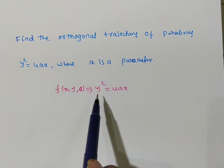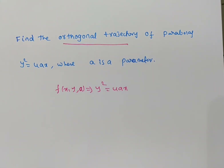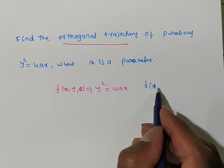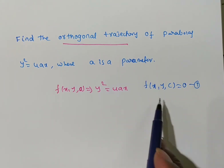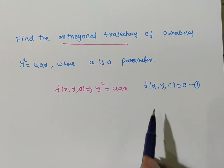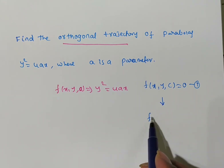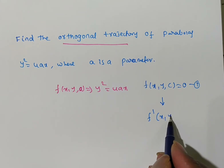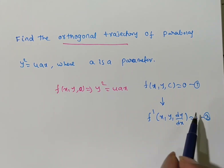What we need to find is the orthogonal trajectory for this family in Cartesian coordinates. Whenever we are given a function f(x, y, c) = 0 as a family of curves where c is a parameter, to find the orthogonal trajectory we first need to find the differential equation. For that, differentiate with respect to x and eliminate the parameter to get f(x, y, dy/dx) = 0. This is called the differential equation of the family.